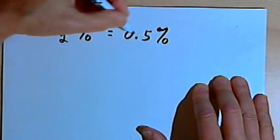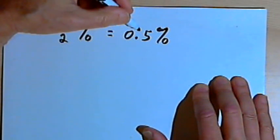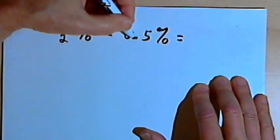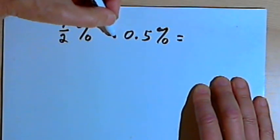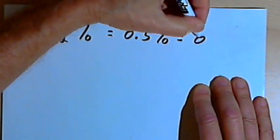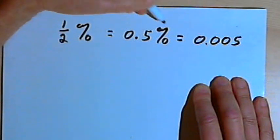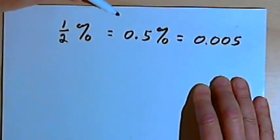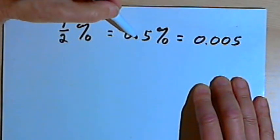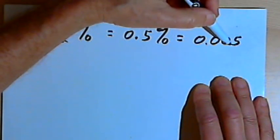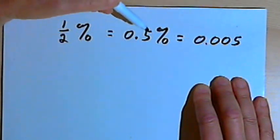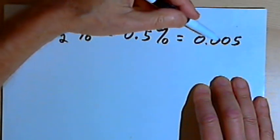And now I can move its decimal point two places to the left. So I'm going to have 0.005, and I drop the percent sign. So I've moved the decimal point two places to the left. From here, two places to the left, I get 0.005.